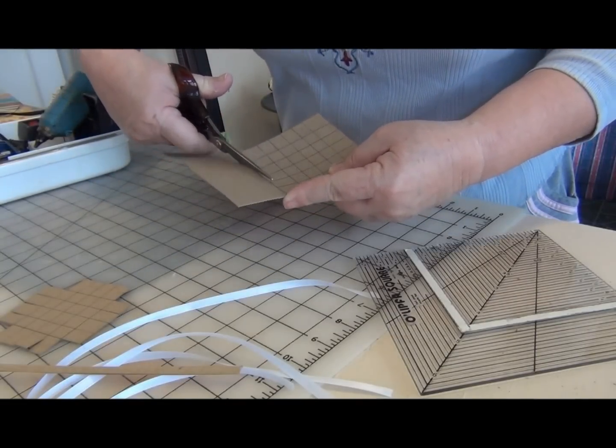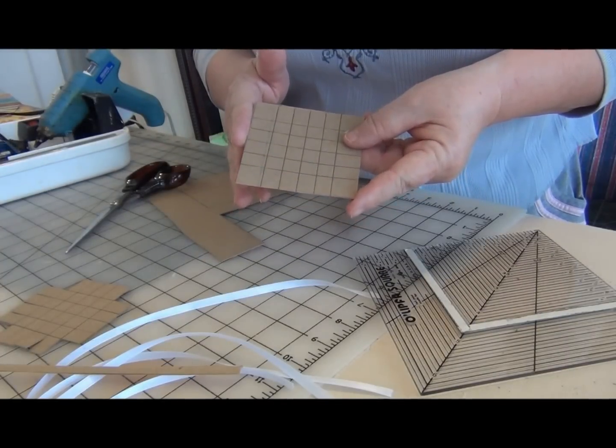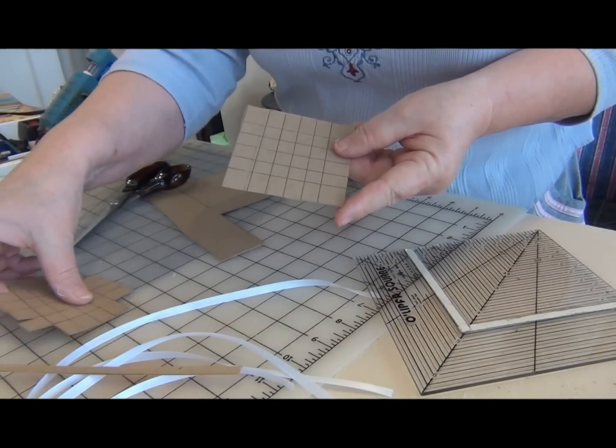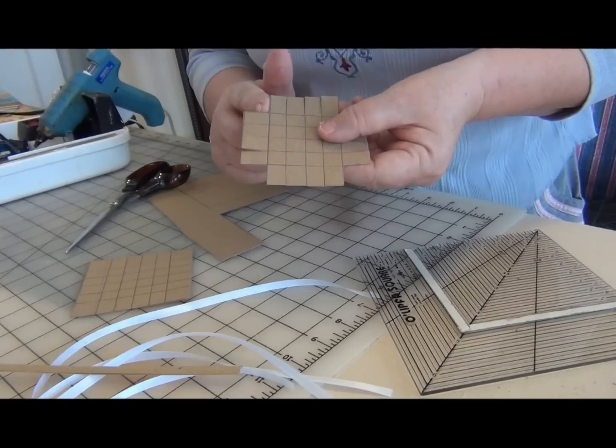The little two-inch basket just requires a three and a half-inch square of cardboard. Take your pattern and score it. Mark it off the way that this one is done.